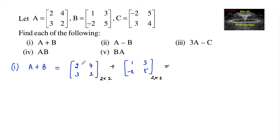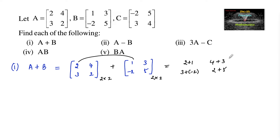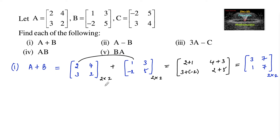We add the corresponding elements: 2 plus 1, 4 plus 3, 3 plus negative 2, and 2 plus 5, which equals 3, 7, 1, and 7. So A plus B is the 2 by 2 matrix with entries 3 7 1 7.